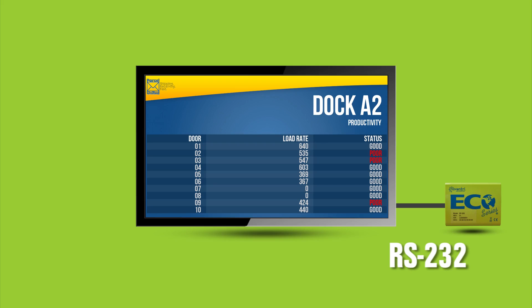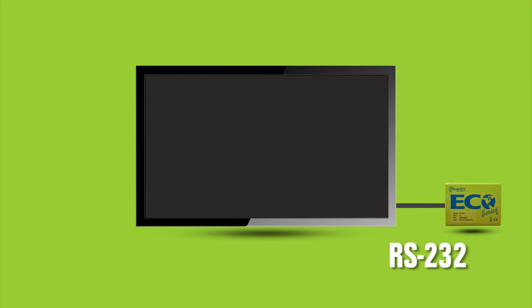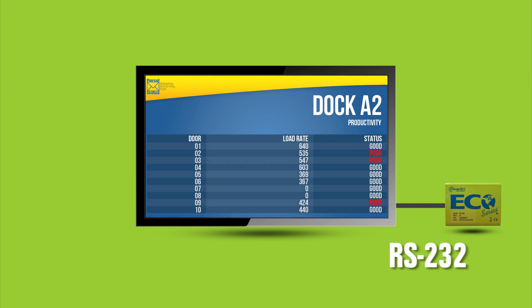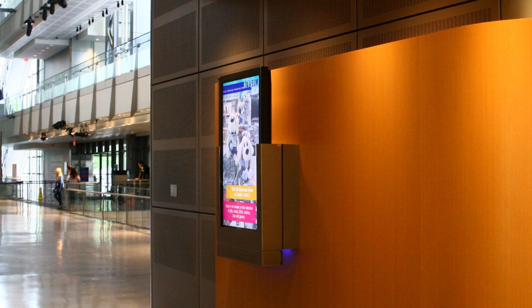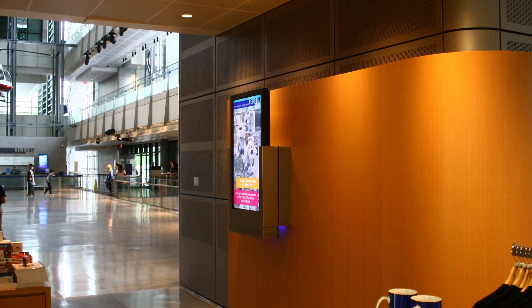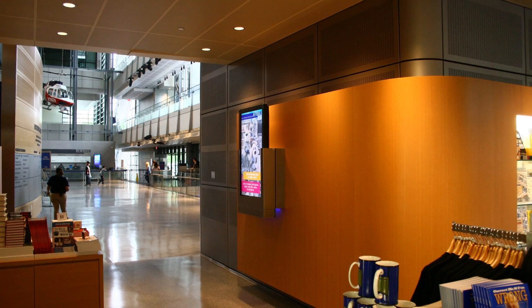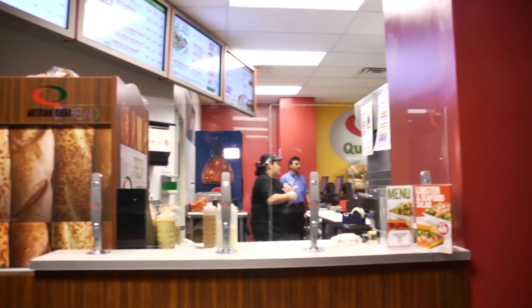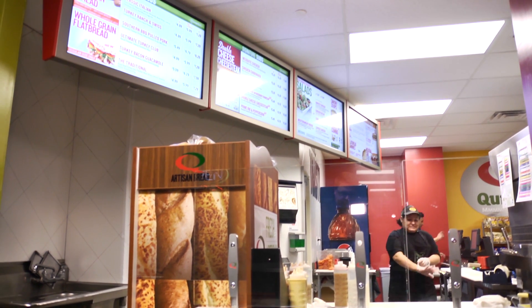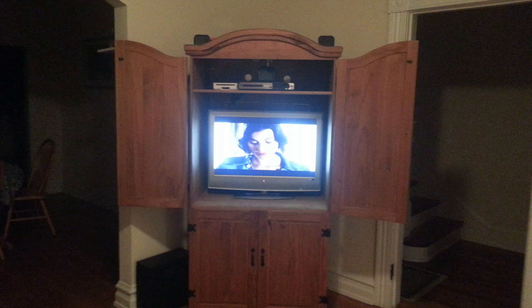Consumer screens do offer some features — you can even access your Netflix account or stream YouTube videos through your TV. But with commercial screens, that's where you get the real enterprise-level features. For example, RS-232 commands allow your digital signage to control when your display comes on and off, and control brightness, contrast, and other menu settings. Special fans and venting built into commercial-grade screens enable you to mount them in a vertical or portrait position without worrying about overheating. They also display brighter, since they're designed for well-lit environments, whereas consumer screens are suited for typical living room lighting.